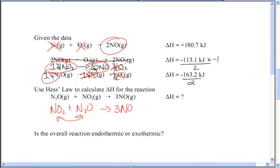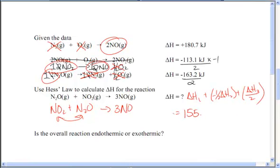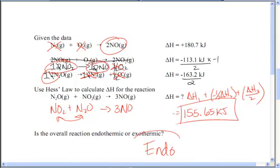So my delta H will be the delta H for reaction one plus negative one half the delta H for reaction two plus the delta H for reaction three divided by two. So I pull out my calculator and I get 180.7 plus negative 0.5 times negative 113.1 plus negative 163.2 divided by 2. And it's 155.65. I'm not really concerned about sig figs here. Just don't go buck wild with them. It says, is the overall reaction endothermic or exothermic? Well, it's a positive delta H and positive means endothermic.